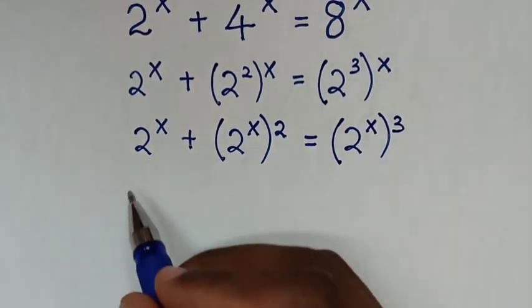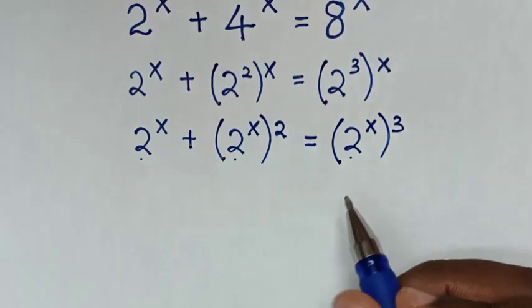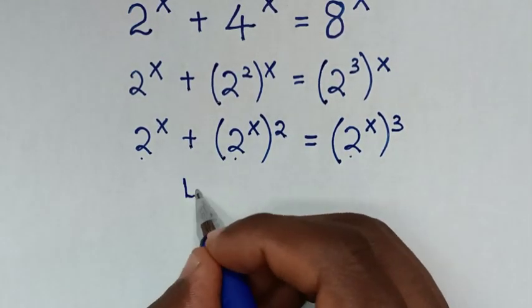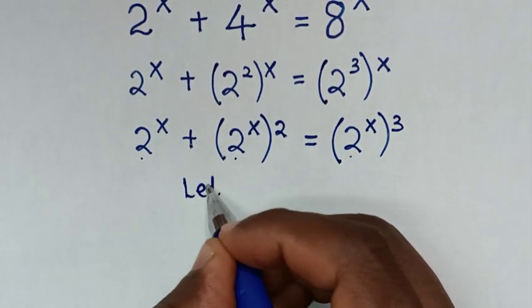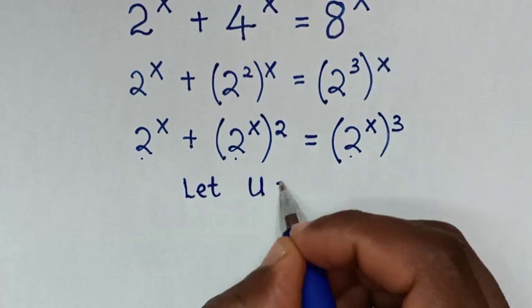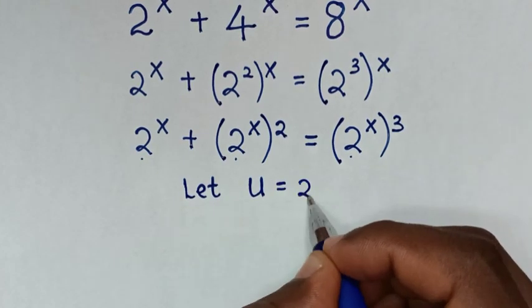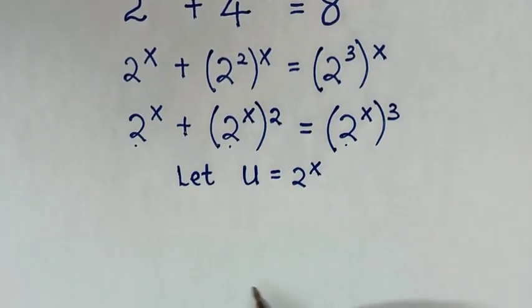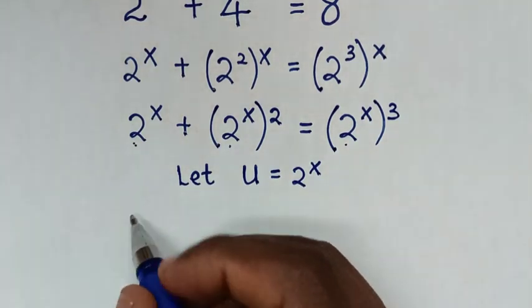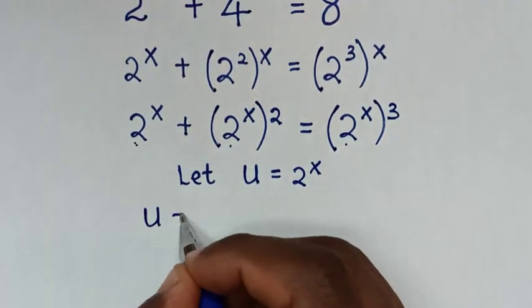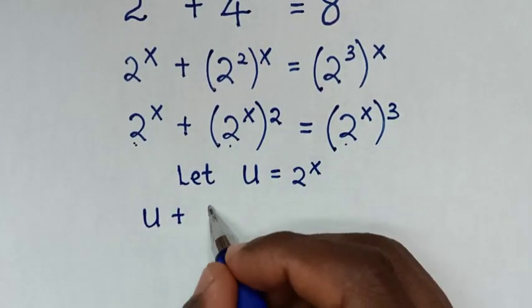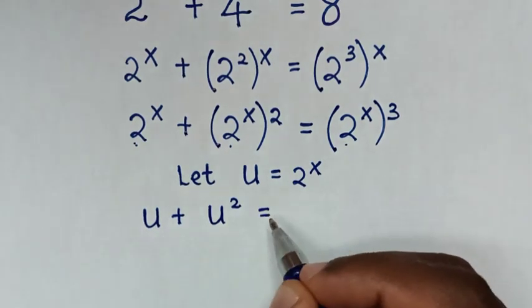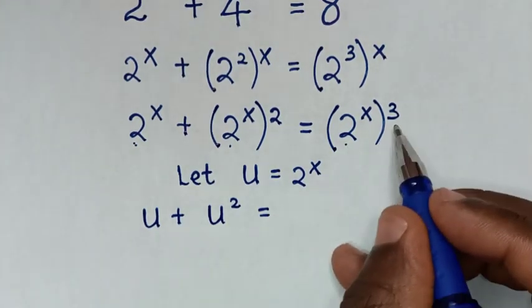From here, 2^x is common. So we let u equal to 2^x. Then our equation becomes u plus u squared is equal to u cubed.